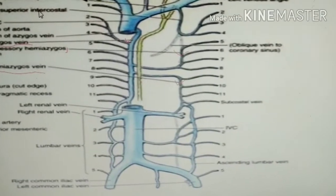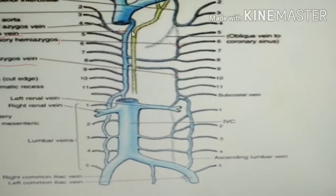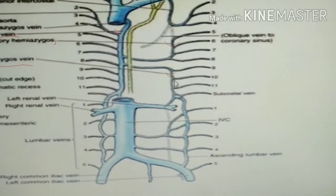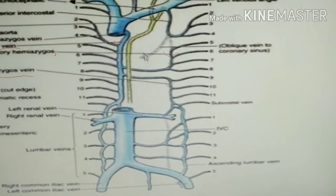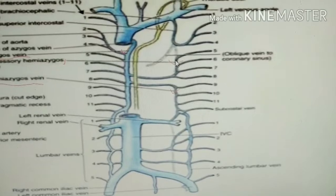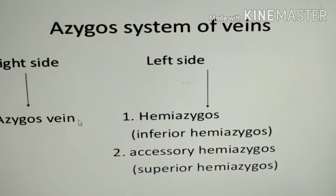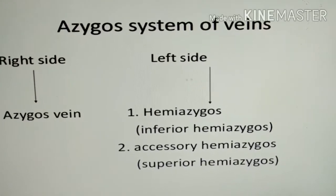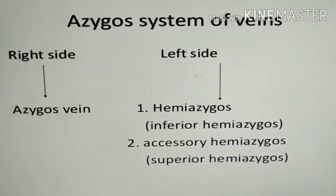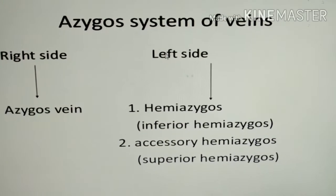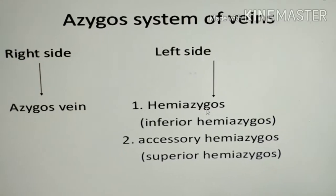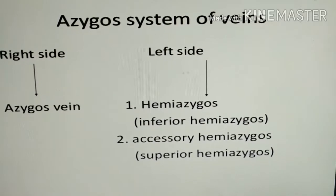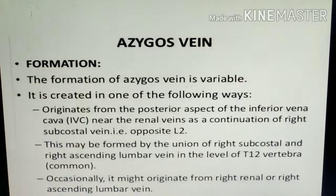This figure shows the Azygos System. This is the Azygos Vein, this is the Hemiazygos Vein, and this is the Accessory Hemiazygos Vein. On the right side, only the Azygos Vein is present. On the left side, the Hemiazygos and Accessory Hemiazygos are present. The Hemiazygos is also known as the Inferior Hemiazygos, and the Accessory Hemiazygos is also known as the Superior Hemiazygos.